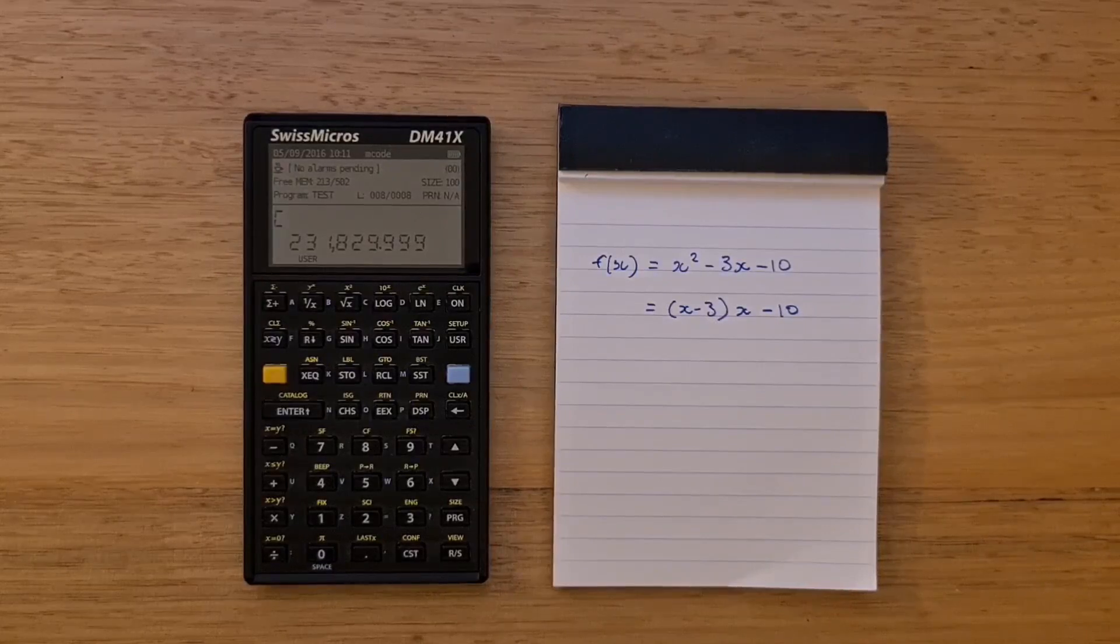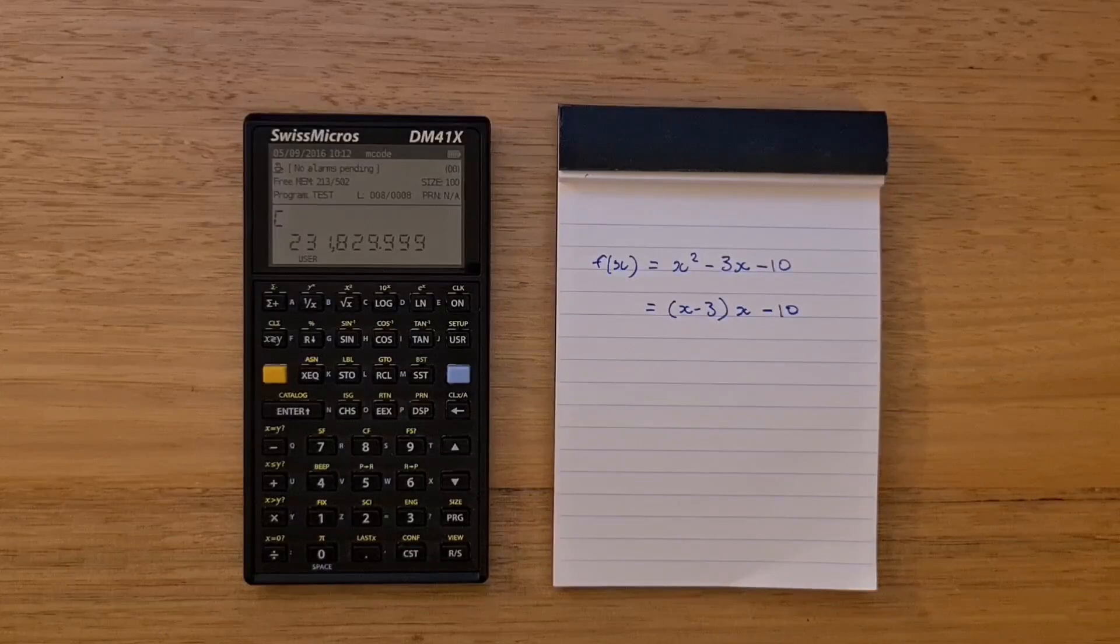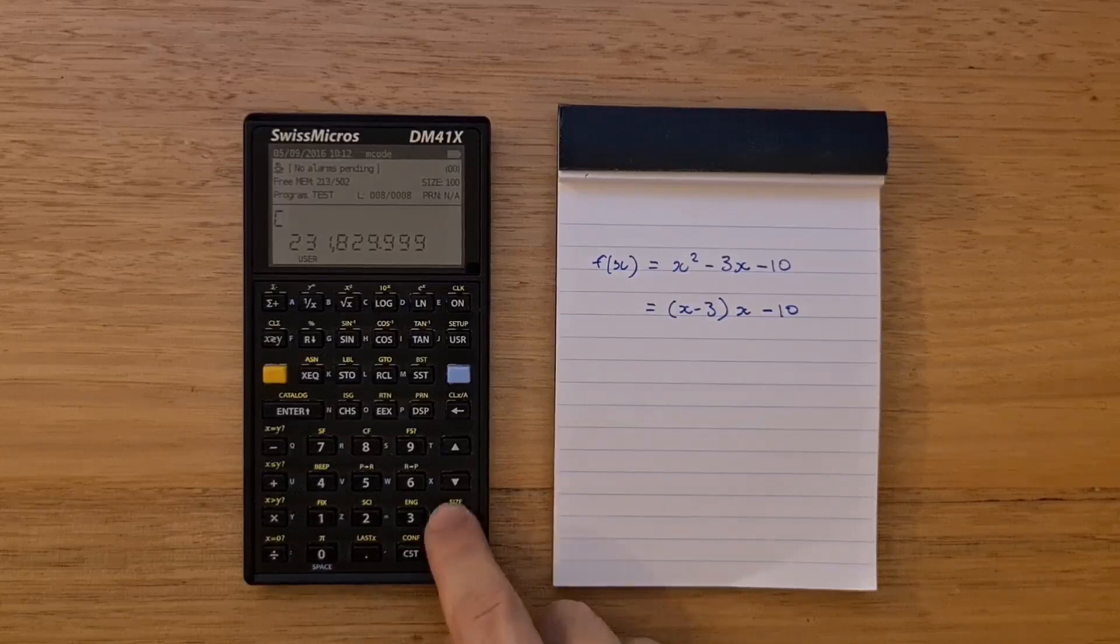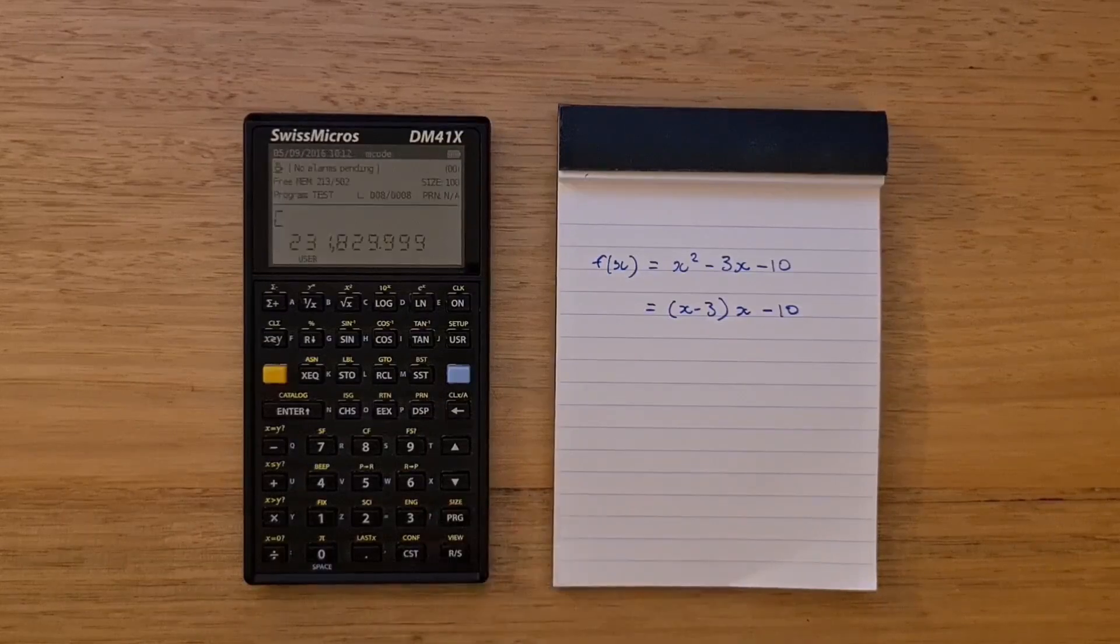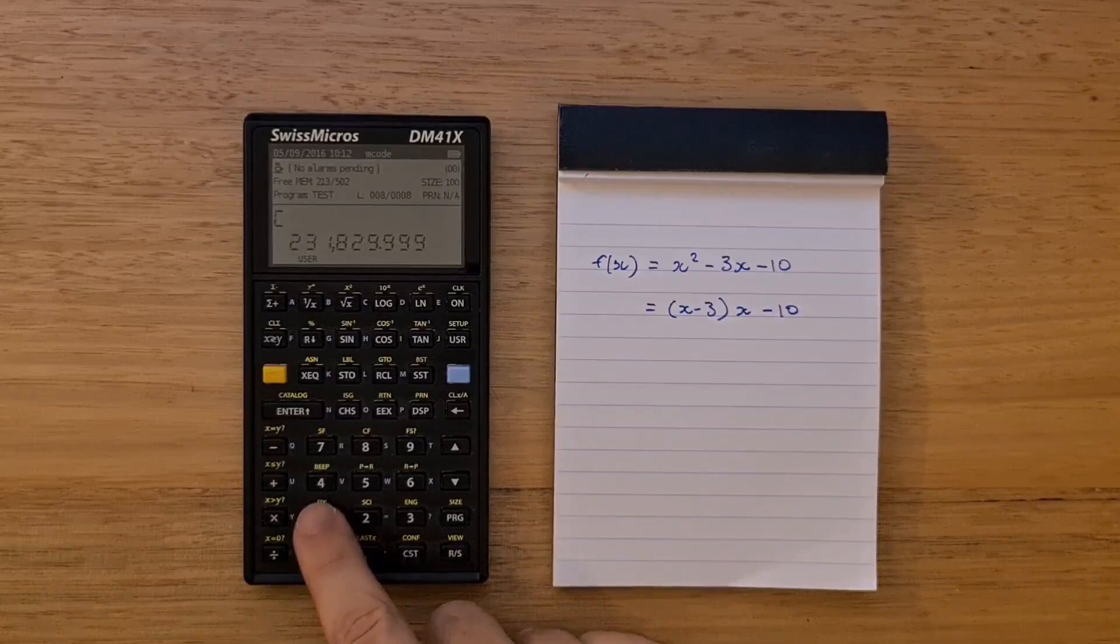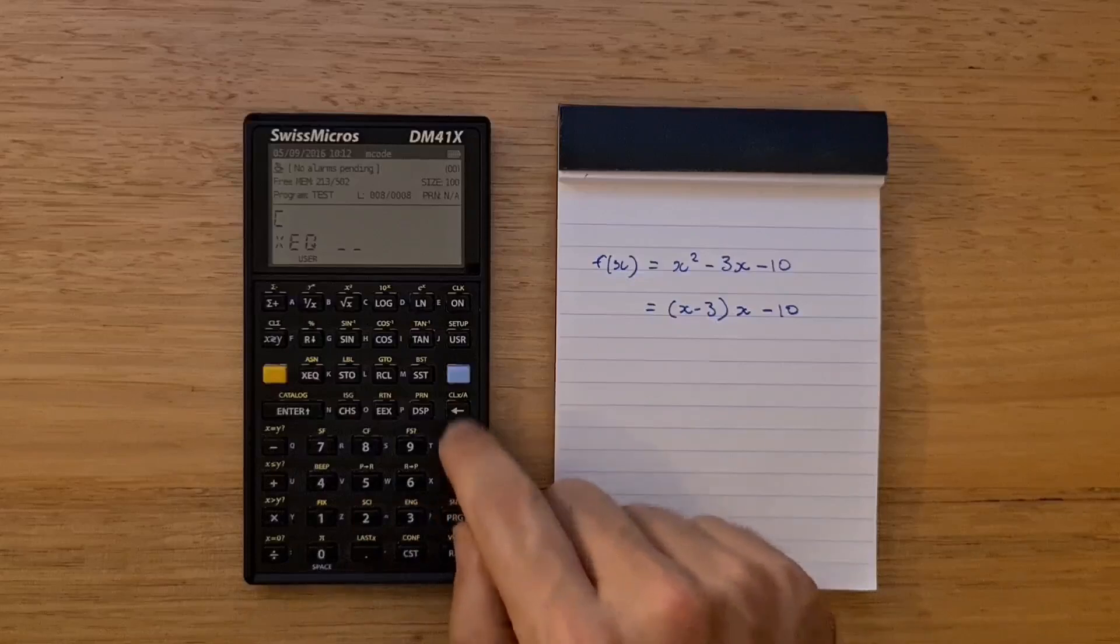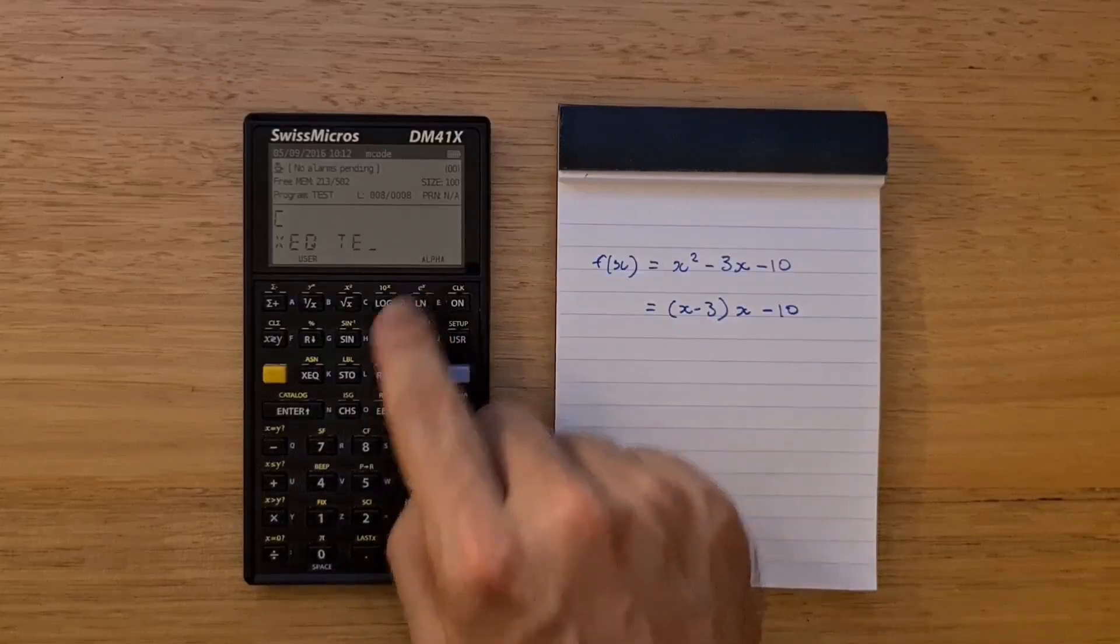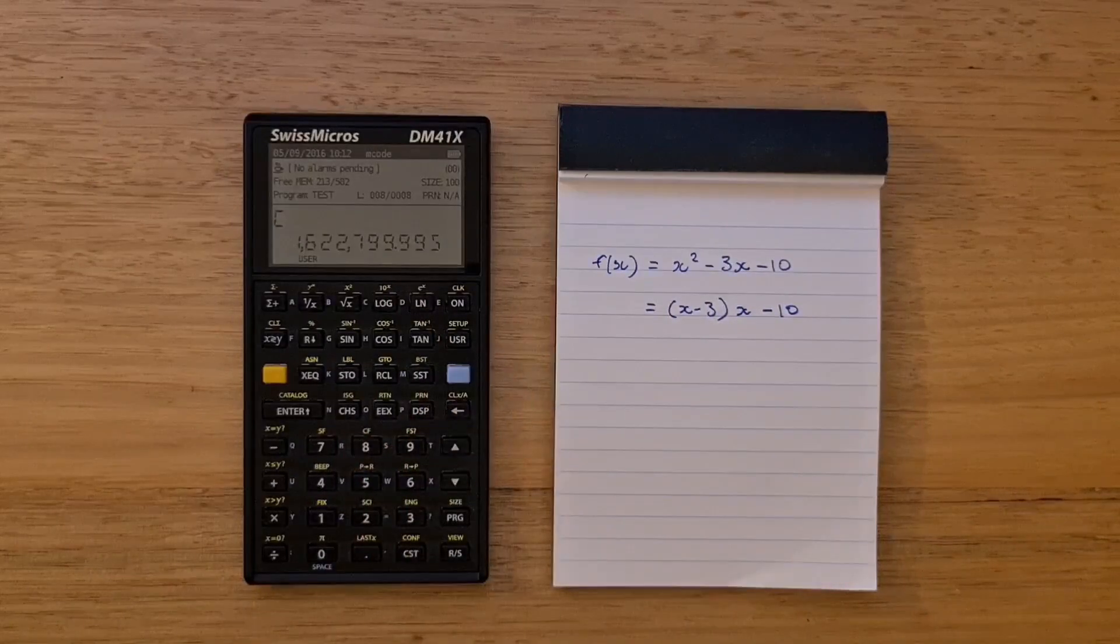Then the search continues again using the secant method. For example, to find the roots of x squared minus 3x minus 10, I've created a program called test, which calculates this function. To test the function works, we can enter, say, 10 into x and then execute test.